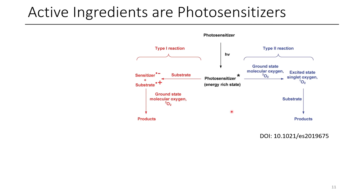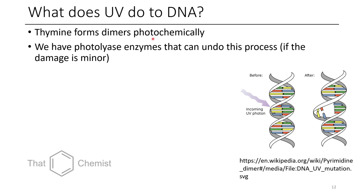So what does UV do to DNA? We have a nucleobase called thymine, and when thymine is hit with UV light it can form dimers. We actually have photolyase enzymes which can undo this process, fortunately. So if there is a small amount of damage, the cell is able to repair itself. However, if the damage becomes too excessive, the cell will undergo apoptosis and die so that it doesn't create cancer. Two possible dimers can form: the cyclobutane dimer, formed through a 2+2 cycloaddition, and another where a radical is generated on the methyl group and then adds into the alkene of another thymine. It's cool to know that we have mechanisms to detoxify when possible.